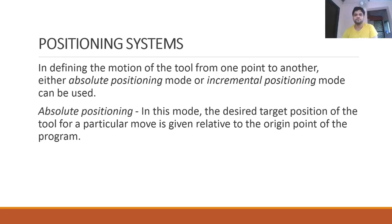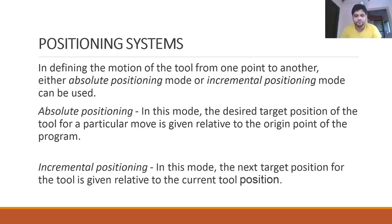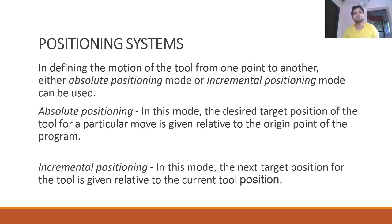In incremental positioning, the next target position is given relative to the current tool position. The origin is movable — the current position of the tool becomes the origin. You give dimensions relative to the current position, not the part origin. Before each block of instruction you define which positioning system you are using, and X and Y coordinates are interpreted accordingly.